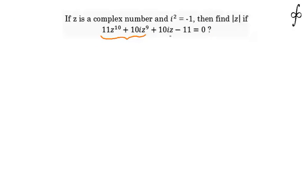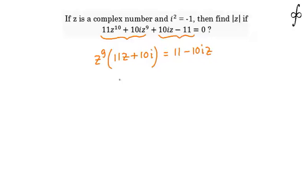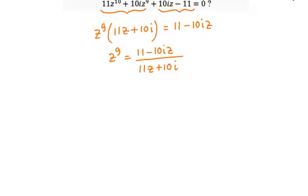Let's plan it by grouping the first two terms and the last two terms. Taking z to the power 9 common from the first two terms gives 11z plus 10 iota, and taking the other two terms to the RHS gives 11 minus 10 iota times z. So z to the power 9 equals 11 minus 10 iota times z divided by 11z plus 10 iota.